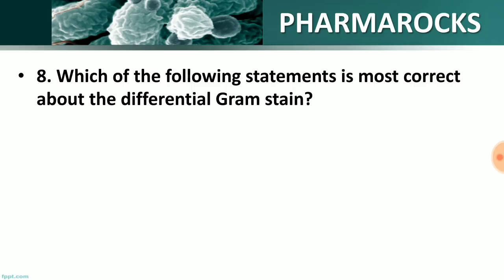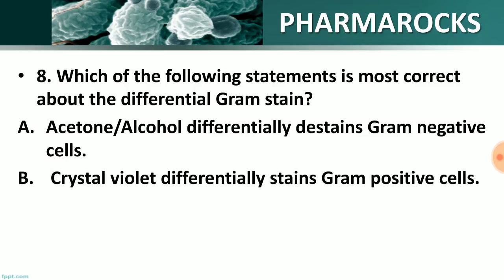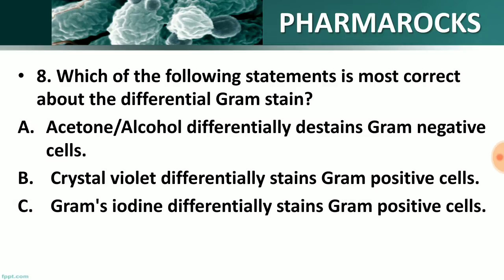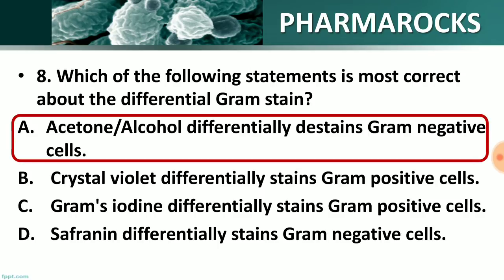Question number 8: Which of the following statements is most correct about the differential gram stain? Options: A) acetone-alcohol differentially destains gram-negative cells; B) crystal violet differentially stains gram-positive cells; C) gram's iodine differentially stains gram-positive cells; D) safranin differentially stains gram-negative cells. The right answer is option A — acetone and alcohol differentially destain the gram-negative cells.